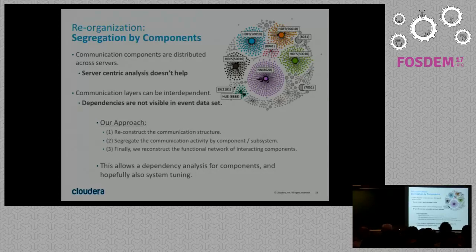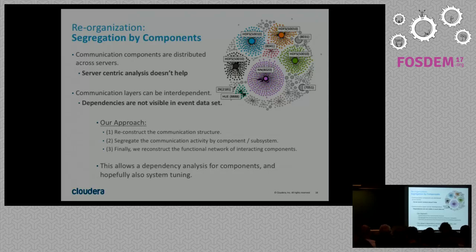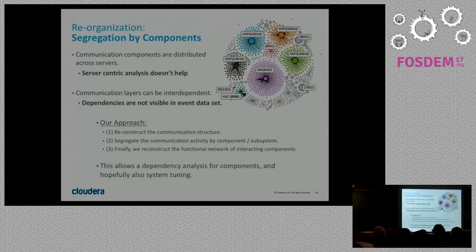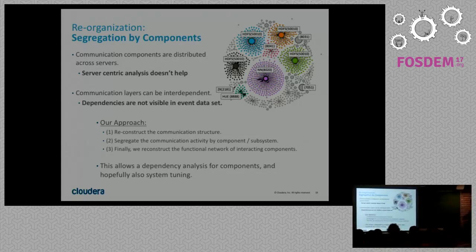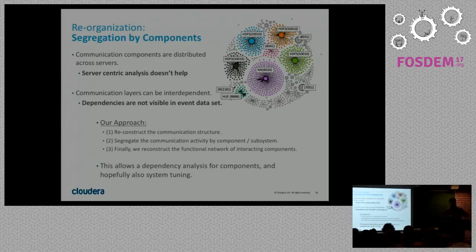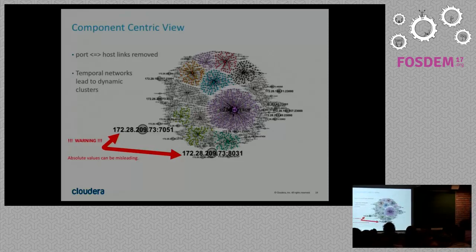We go from a host-centric representation to a layer or subsystem-centric representation. We track the graph over time, apply a component or cluster detection algorithm, which identifies usually isolated clusters because subsystems are generally well isolated in a Hadoop system. Finally, if we have such clusters where different ports can be on very different hosts, it makes sense to aggregate along these clusters rather than along a host. We aggregate per subsystem and get time series, and with these time series we can measure the correlation between HDFS and HBase, or MapReduce and HDFS, and so on.